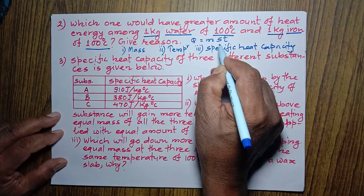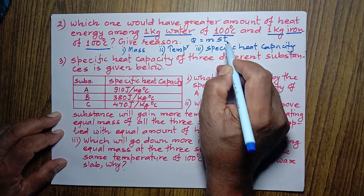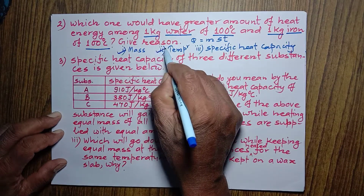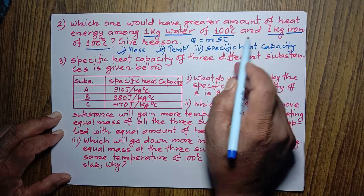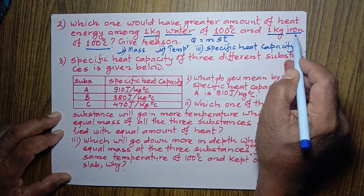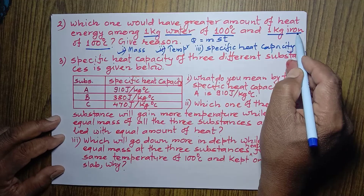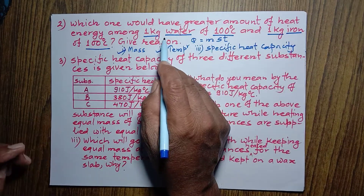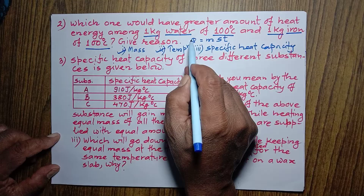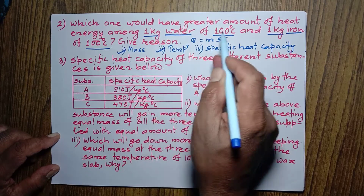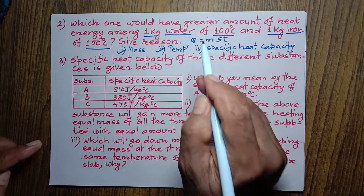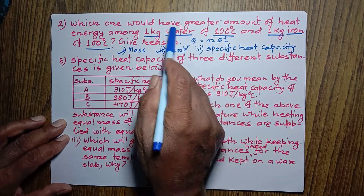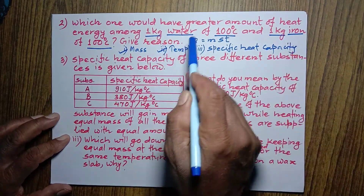Looking at this question, mass of both of them are equal and temperature is also the same. But the specific heat capacity of water is very much higher than that of iron. Specific heat capacity of iron is around 470 to 480 joule per kg degree Celsius, but specific heat capacity of water is very high at 4200 joule per kg degree Celsius. That's why 1 kilogram of water at 100 degree Celsius contains more heat energy than 1 kilogram of iron at 100 degree Celsius, due to water's greater specific heat capacity.